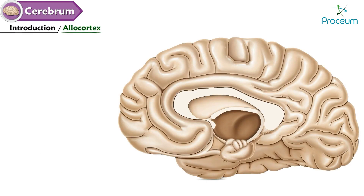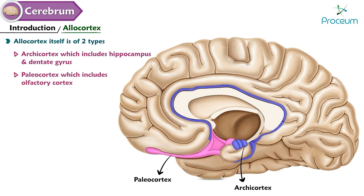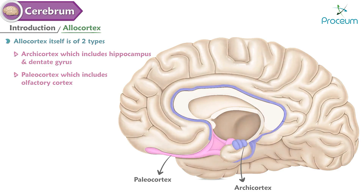The allocortex itself is of two types: archicortex (or archaeocortex), which includes the hippocampus and the dentate gyrus; and paleocortex, which includes the olfactory cortex.